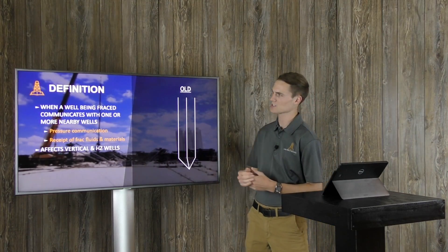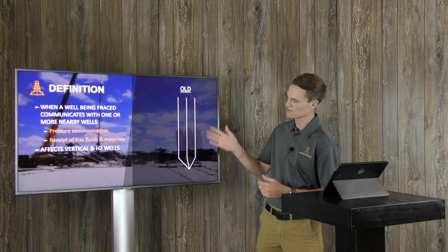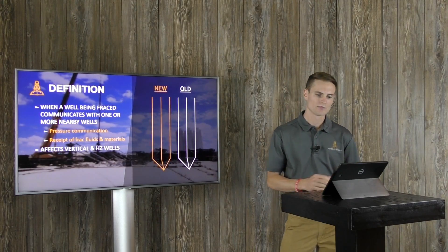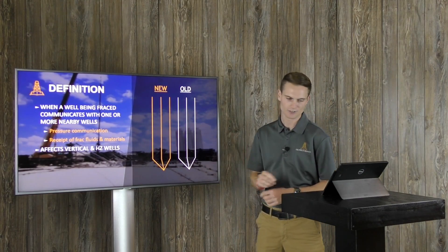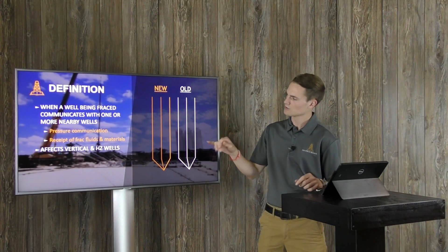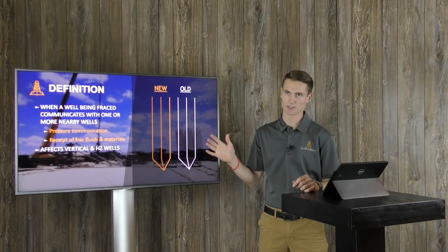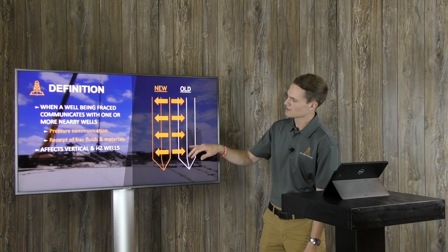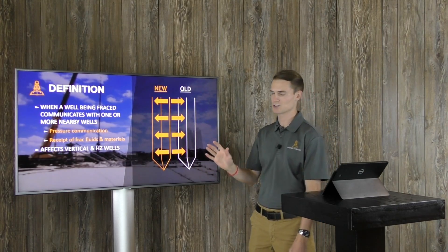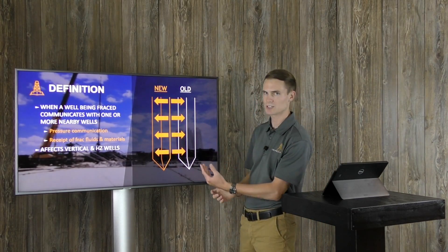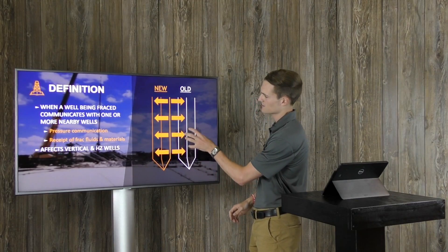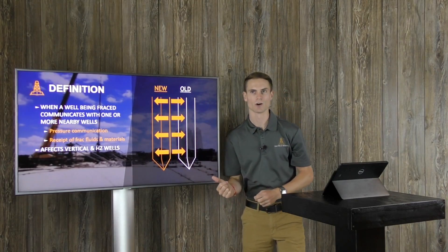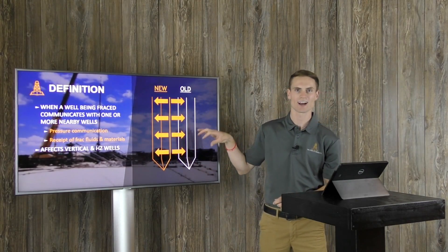So on an aerial view, this is what it looks like. You've got an existing well pad, in this case you've got three laterals, then you come in and you drill three new laterals, and you're going to be fracking this one first. So as you hydraulically fracture this lateral, it's going to communicate, it has the potential to, given distance and things we're going to be talking about, it can impact this old well, this pre-existing well. So these wells are going to get frac hit.